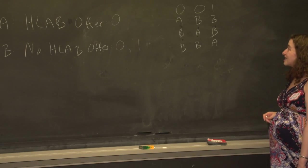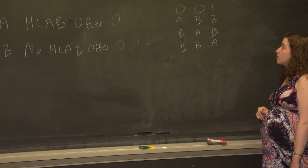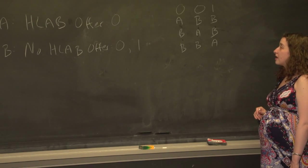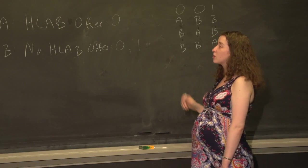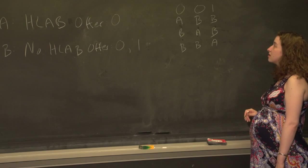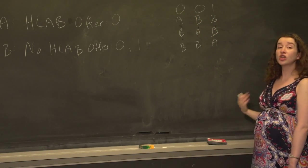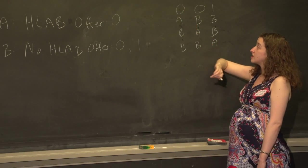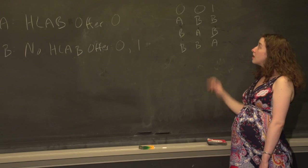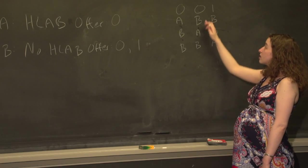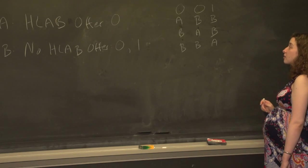For each of these different possibilities, we're going to write down what the difference in mean win rates between group A and B would have been, assuming that which group you're in has nothing to do with these values — in other words, under the null hypothesis. Person one would have gotten a zero regardless of whether he was in group A or B. Person two would have gotten a zero regardless of whether she was in A or B. Person three would have gotten a one regardless of whether she was in A or B.